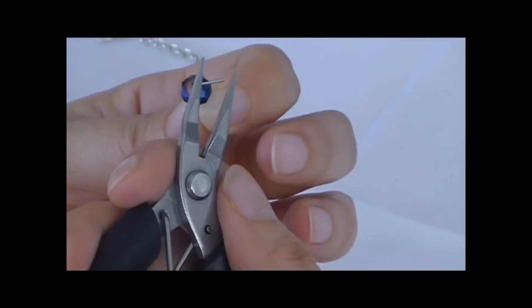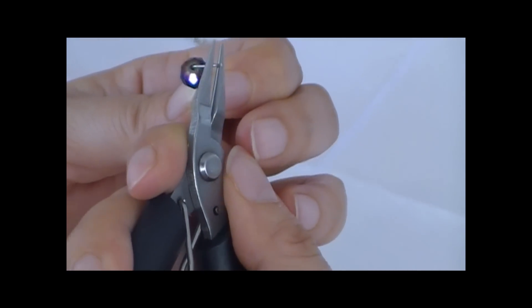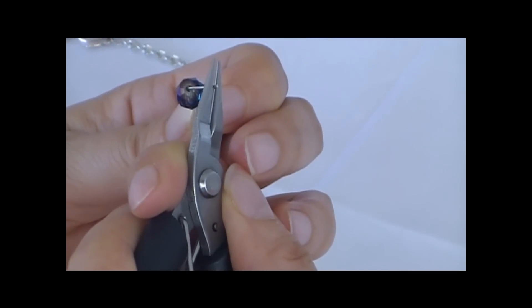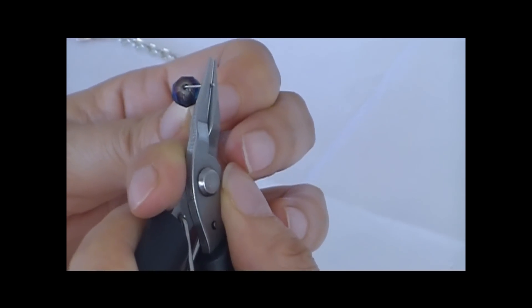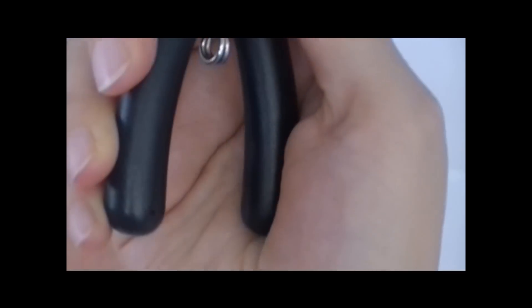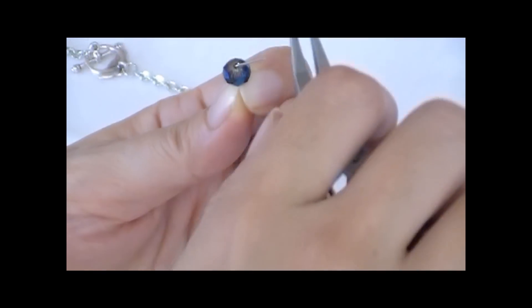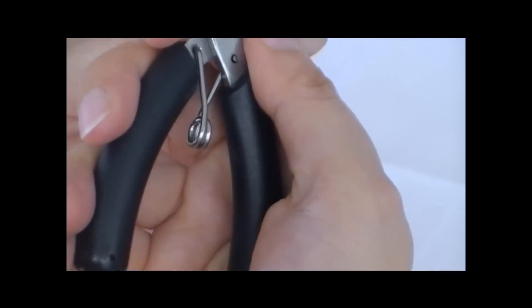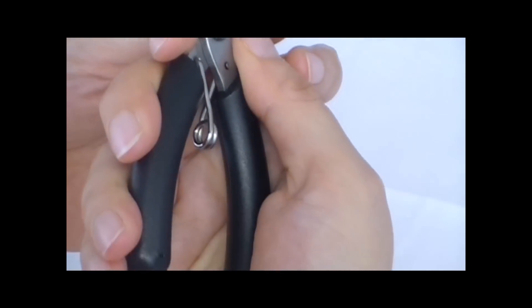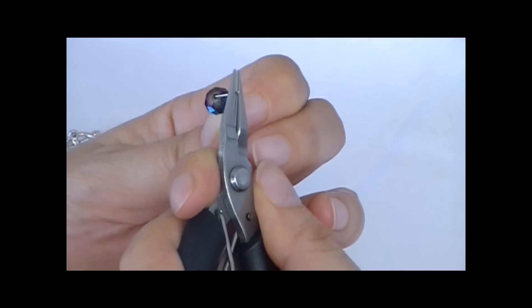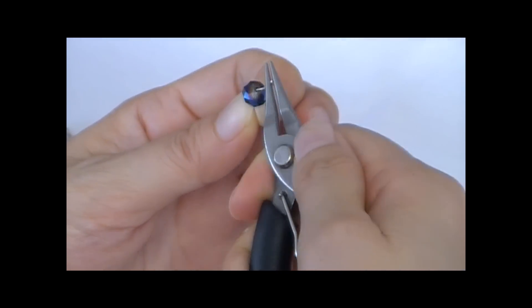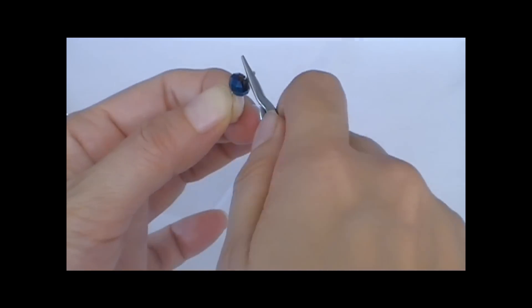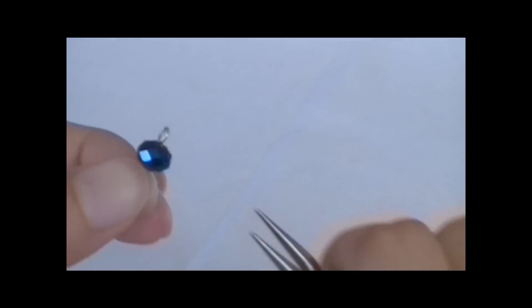Now I'm going to start making a turn to make the loop for the bit. So notice how I hold the plier. I hold it this way instead of this way. So place your plier here and turn your hand inward to the end. And as you notice now, I have completed the first loop.